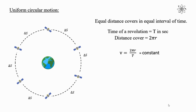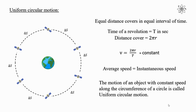This speed v is constant. That is, the distance covered by the satellite per second is constant. As the distance covered per second is constant, the distance covered in any finite time interval is also constant. From this, we can write that average speed is equal to instantaneous speed. So we can say that the motion of an object with constant speed along the circumference of a circle is called Uniform Circular Motion.